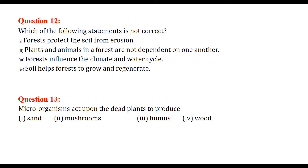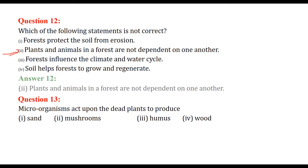Which of the following statements is not correct? The second statement — 'plants and animals in a forest are not dependent on one another' — is wrong, because they are in fact dependent on each other.